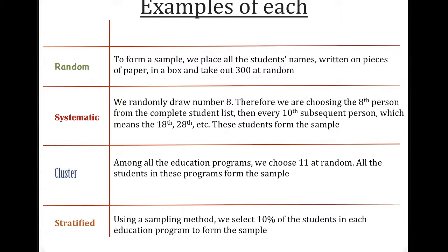And finally, stratified. So using a sampling method, we select 10% of the students in each education program to form the samples. Now we're talking about specifically different programs. And that's called strata because it's heterogeneous, different types of programs. So you could have secondary math, secondary English, elementary, and so on.